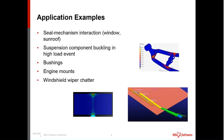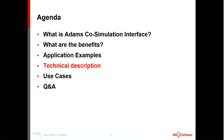Let's talk about a few application examples. A number of things that involve seals are good examples — complicated window or sunroof mechanisms driving seals and having interaction between those things. Suspension component buckling in a high-loading event is another example. Other kinds of rubber bushings, mounts, or isolators in vehicles are applicable. Windshield wiper chatter is another interesting use case. We'll talk through a few use cases in more detail following the technical description.